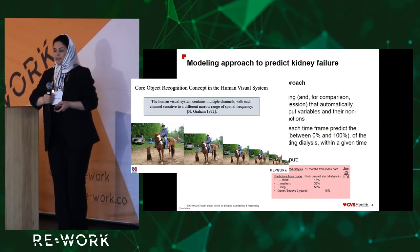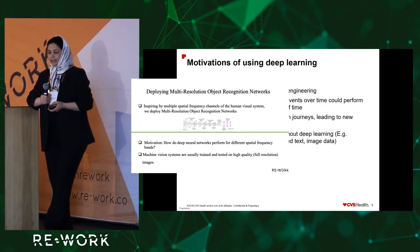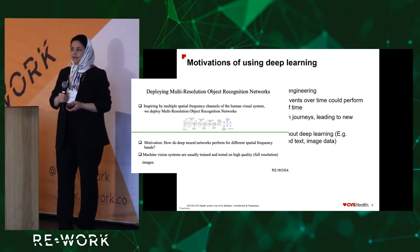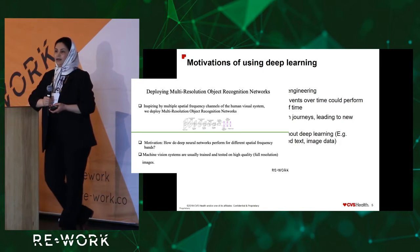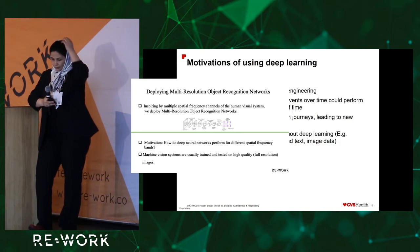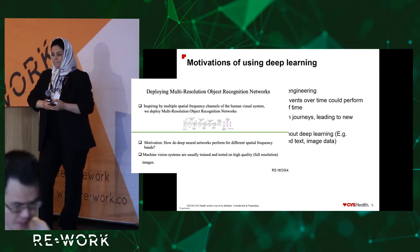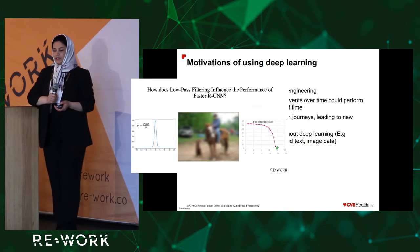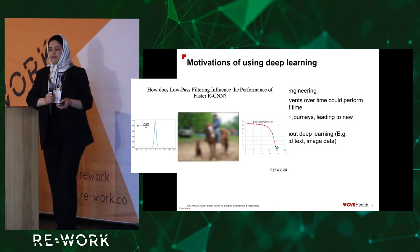Inspired by the multiple spatial frequency channels of the human visual system, we are going to deploy a multi-resolution object recognition network. The motivation for this is that most machine vision systems are usually trained and tested on high-quality images. The question is: how do deep neural networks perform for different spatial frequencies? I am going to show you the performance of one object recognition system in the presence of images with different resolutions.